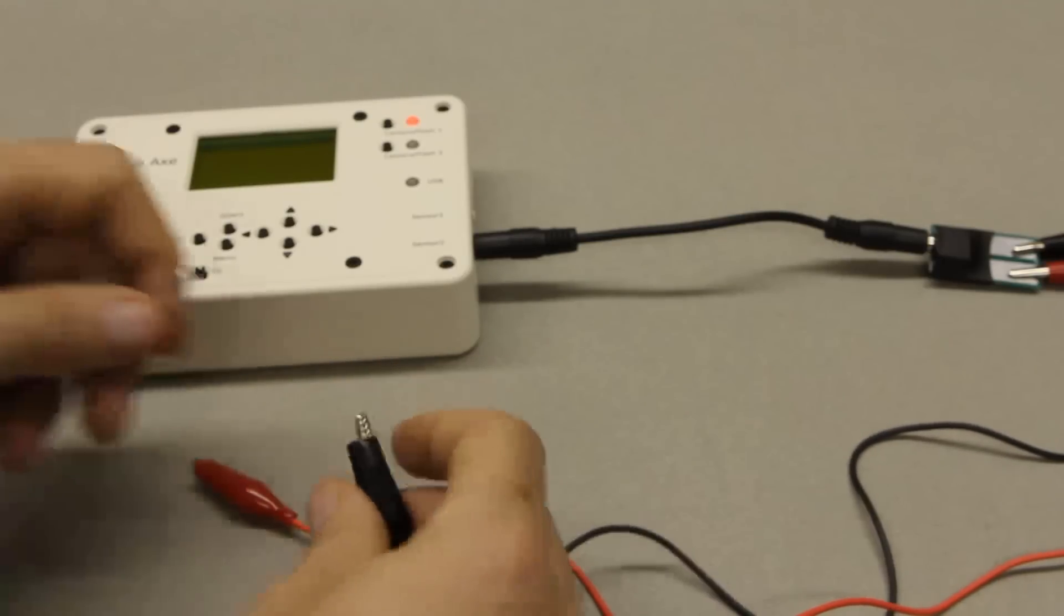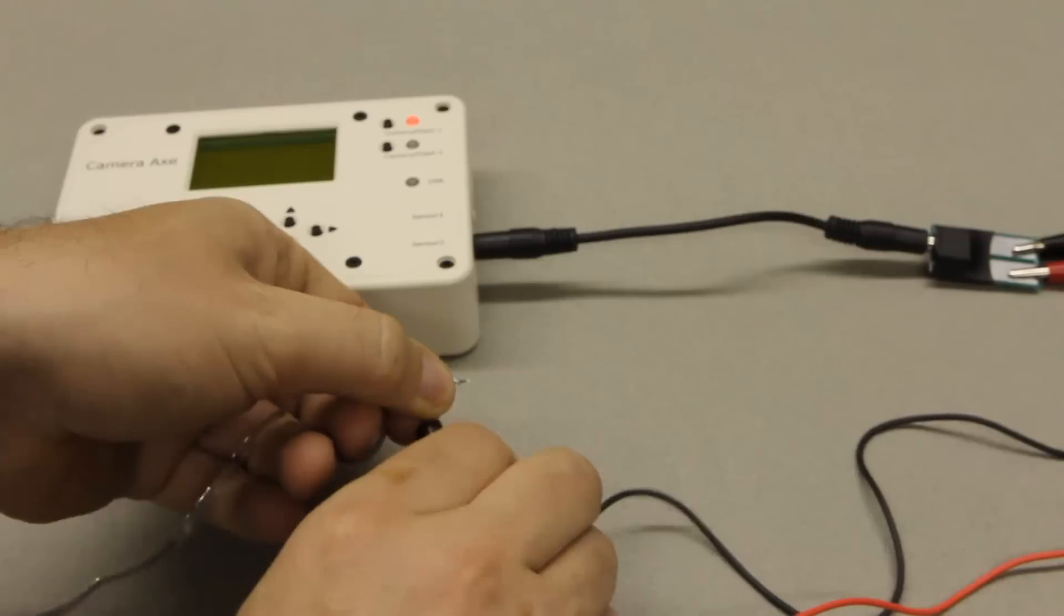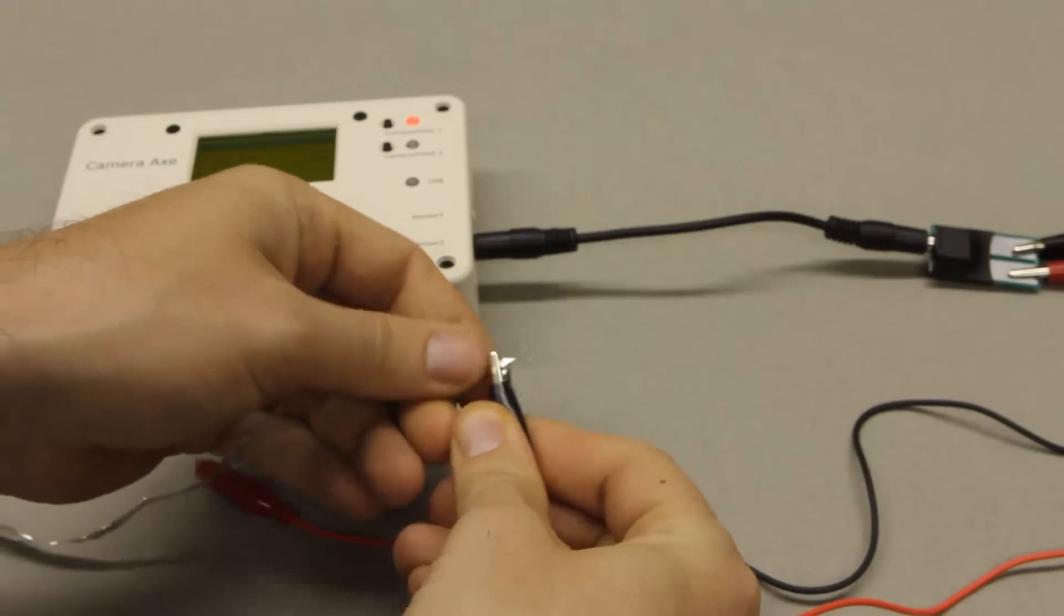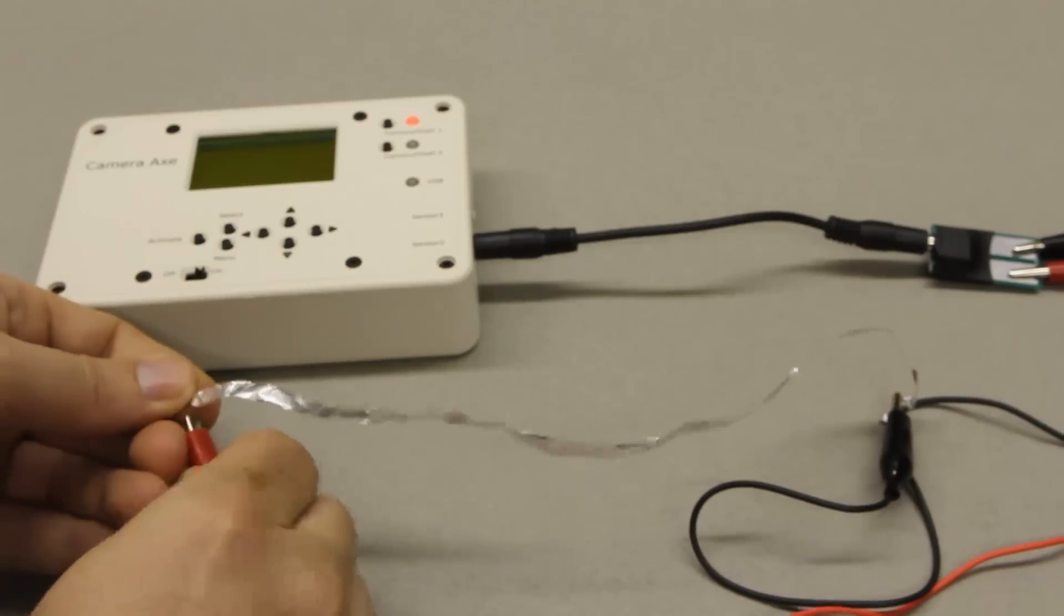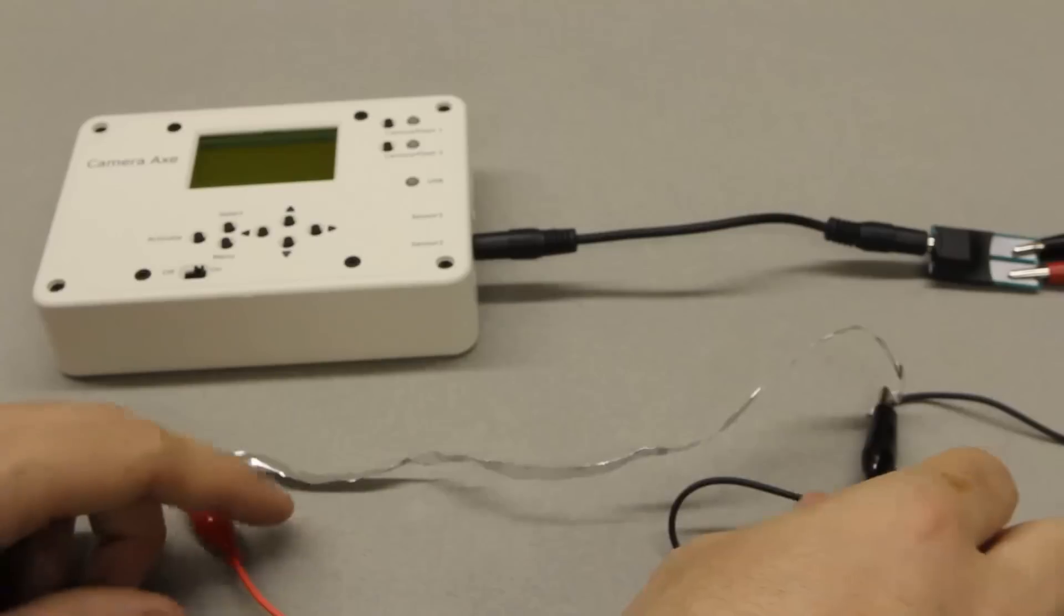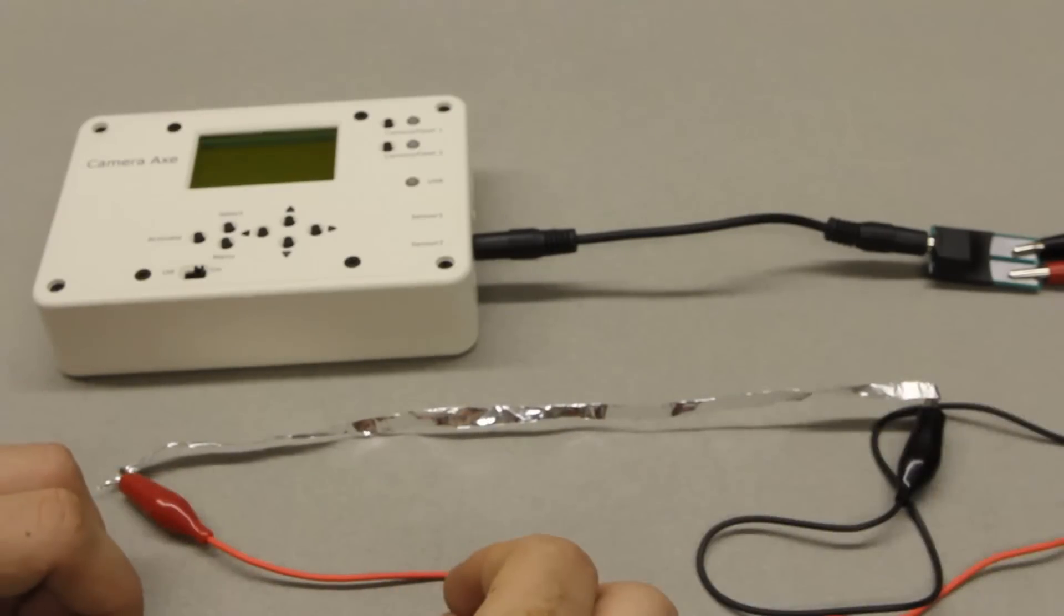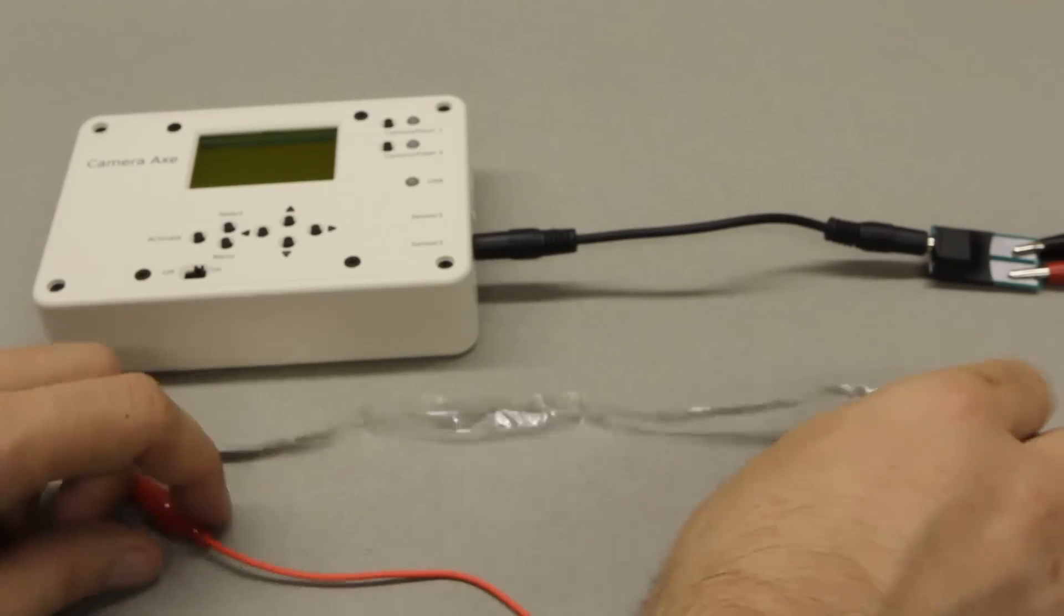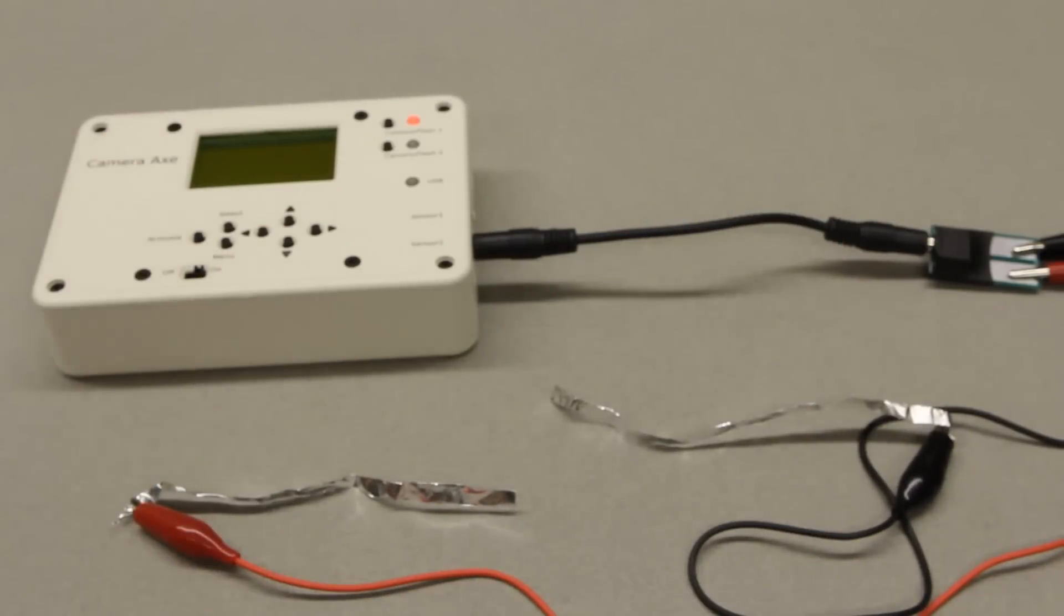You can see it's continuously triggering until I connect the wire. There, now it won't trigger anymore. Since I didn't have any wire, I just used a piece of tinfoil again. When somebody's walking through here and breaks the wire, it'll trigger the camera.